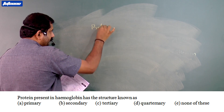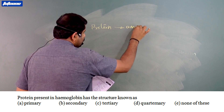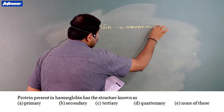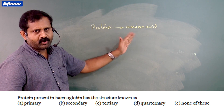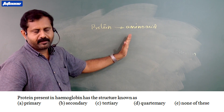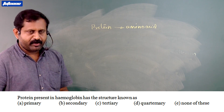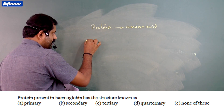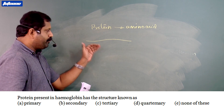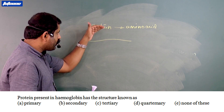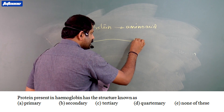Protein is made up of amino acids, joined by peptide bonds. Two amino acids can unite together by peptide bond by removing water. A sequence of amino acids forms a protein — it is just like a linear structure. All proteins have this linear structure and it is called the primary structure.